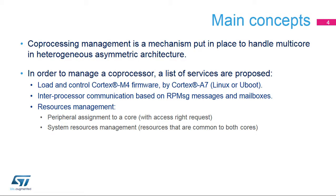Before entering into details, it is important to understand the concepts involved in the management of a coprocessor in a multiprocessor system. The first one is the load and the control of the Cortex-M4 core. The Cortex-A7 core is in charge of loading the Cortex-M4 firmware and controlling the Cortex-M4 core reset. Then, the interprocessor communication is ensured by the RPMSG protocol that relies on shared memory and the IPCC peripheral.